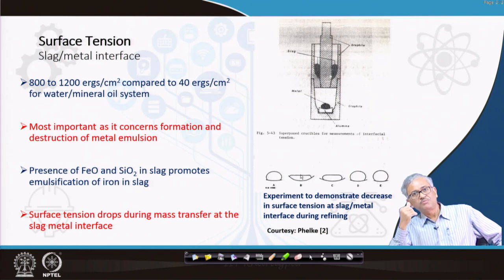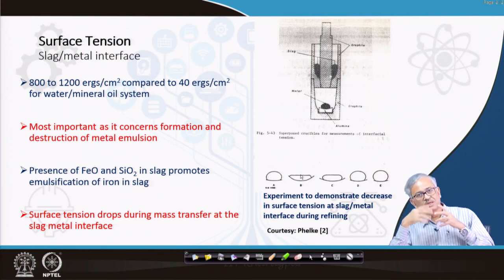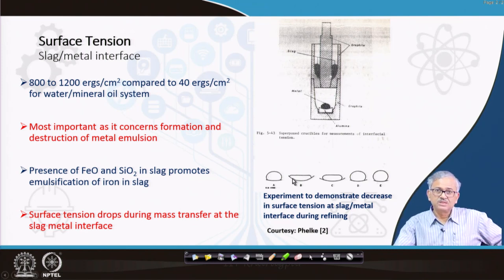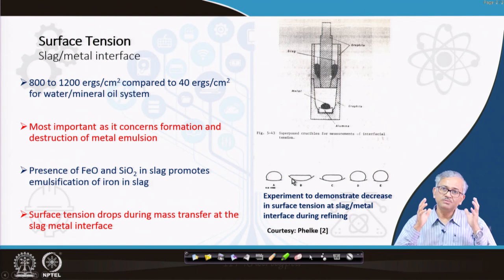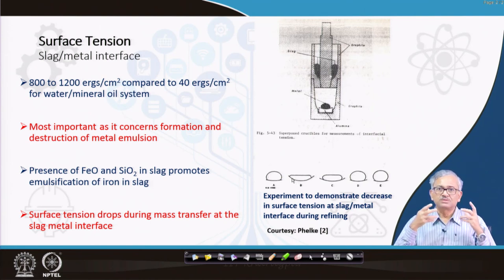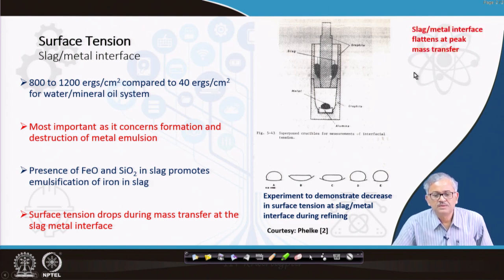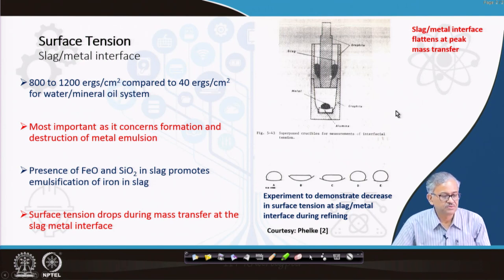During the refining process, the slag-metal interface surface tension decreases significantly, making the emulsion much more stable during active refining. The surface tension flattens at peak mass transfer — a very welcome result. So during the refining process, slag-metal interfacial surface tension decreases significantly, meaning the emulsion will be quite stable throughout refining.